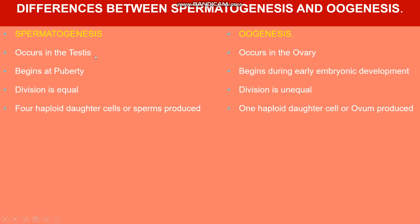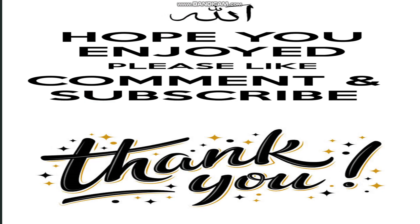Spermatogenesis occurs in the testes whereas oogenesis occurs in the ovary. Spermatogenesis begins only at puberty whereas oogenesis begins during early embryonic development. In spermatogenesis the division is equal, whereas in oogenesis the division is unequal. At the end of spermatogenesis, 4 haploid daughter cells or sperms are produced, whereas at the end of oogenesis, only 1 haploid daughter cell or ovum is produced.